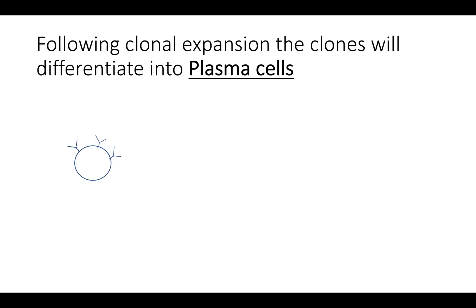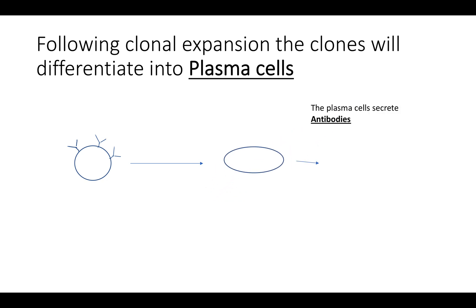Following clonal expansion, the clones will differentiate into plasma cells. These plasma cells are then capable of secreting antibodies. These Y-shaped antibodies have variable regions on their tips that are capable of attaching to the antigen.